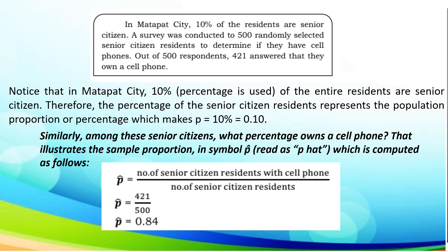Similarly, among the senior citizens the percentage that owns a cell phone is by using the number of senior citizens with cell phone which is 421, and number of senior citizen residents which is 500. So 421 divided by 500 is 0.84.